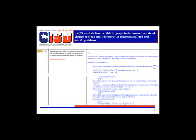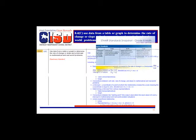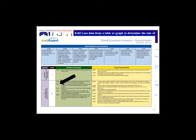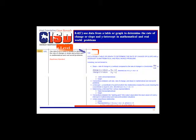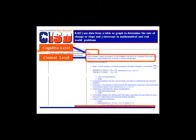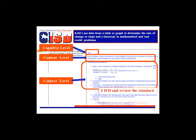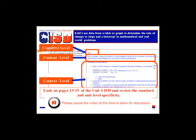Now let's focus specifically on the new TEKS 8.4C. As you can see, this is a readiness standard, part of Reporting Category 2, Computations and Algebraic Relationships, which makes up 41% of the STAAR Blueprint assessment. When reviewing the standard, make sure to identify the cognitive level — the verbs that define what students will be able to do — and the content level, which is the overall concept students will learn and in what context. Please pause the video to look on pages 13 through 15 of the Unit 4 IFD and review the standard and unit level specificity.